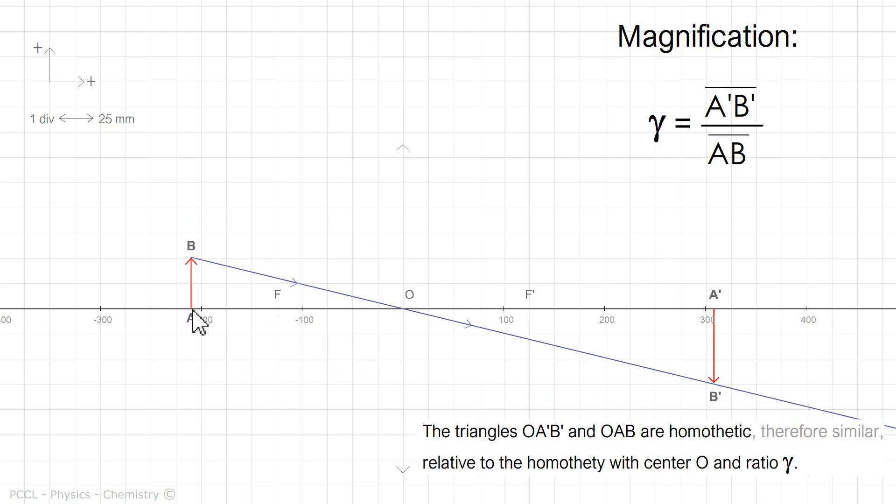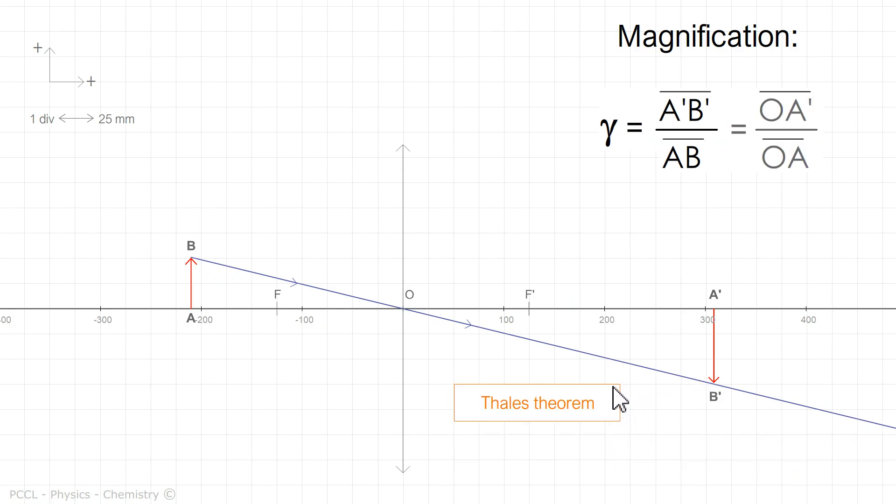I would like to show you two triangles here. That's why I left the particular ray which passes through the optical center which we know is not deviated. These are the triangles OAB and OA'B'. Why am I showing you these two triangles? Because they allow us, being homothetic, to write this relation in another way. Indeed, according to Thales' theorem, A'B' over AB equals OA' over OA.